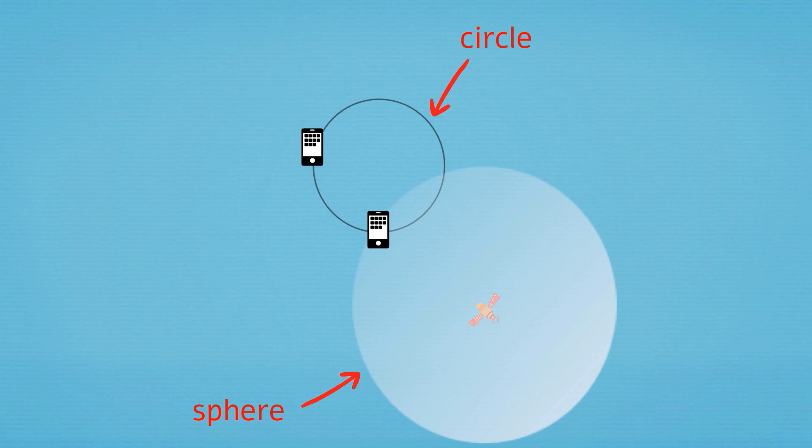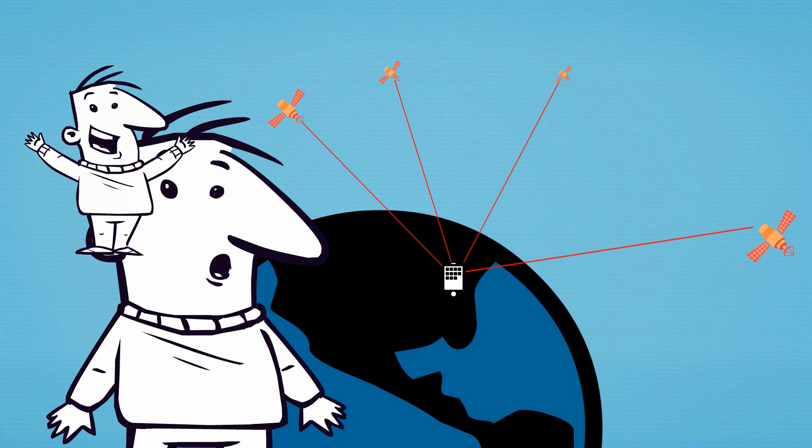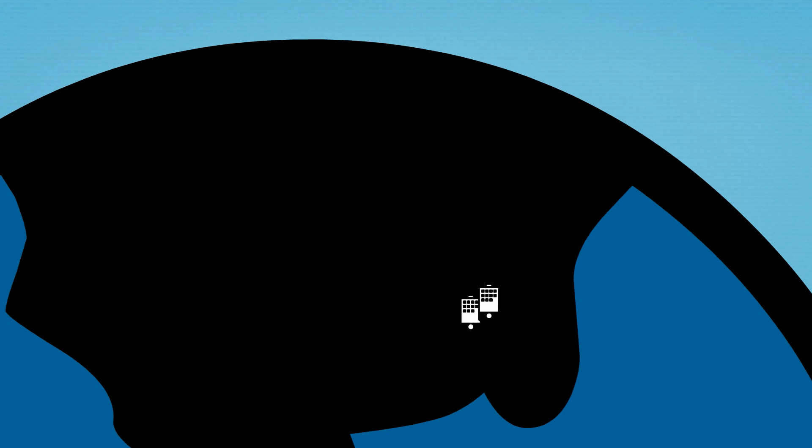So we need a fourth satellite. Then we can determine exactly where we are. So far so good. But it doesn't work. Every day the GPS would accumulate an error of about 10 kilometers, which is over six miles.